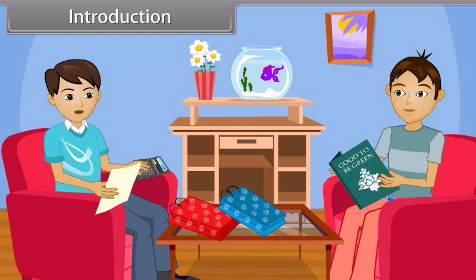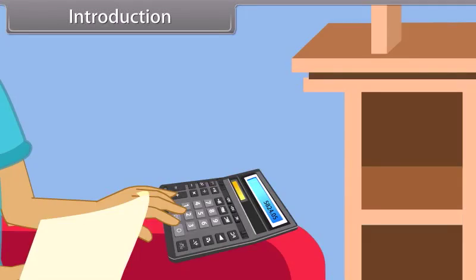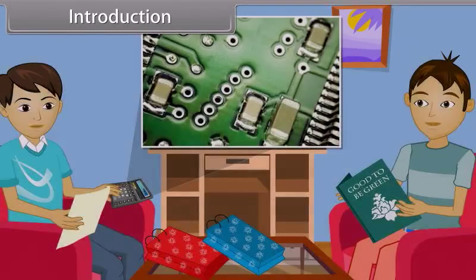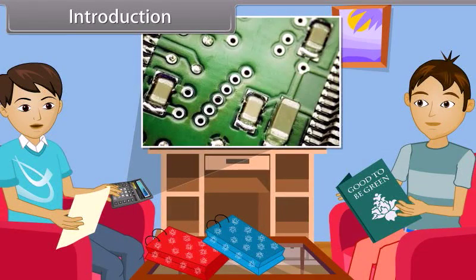Amar replies: I will tell you. A calculator works on the combination of diodes. A diode is a semiconductor device and it can be used for on and off purposes. When the diodes are arranged in a particular manner, they give a specific logical result. Raj says: Now I understand the basic concept of the calculator. It's quite interesting and I want to know more about it. Today we will study about semiconductor electronics.